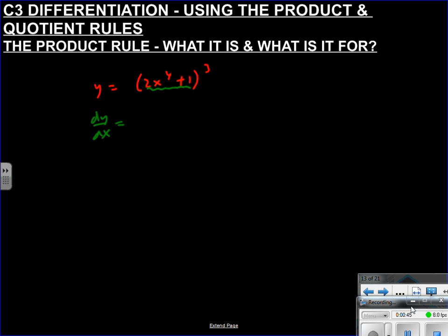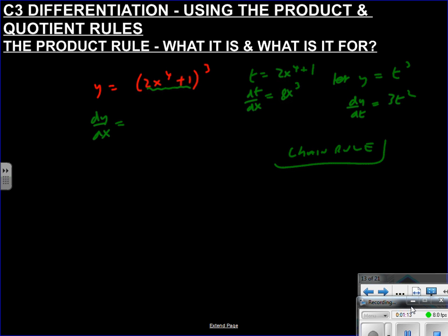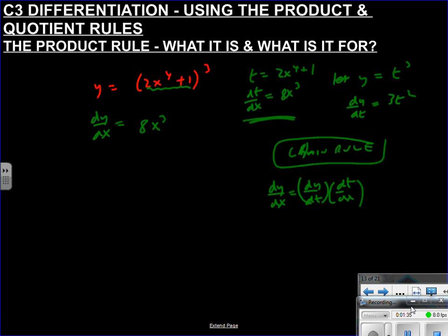Using the substitution method: let t = 2x⁴ + 1, then dt/dx = 8x³, and y = t³. Differentiating y with respect to t gives 3t². By the chain rule, dy/dx = (dy/dt)·(dt/dx), so substituting in the ingredients: 8x³ and 3t².